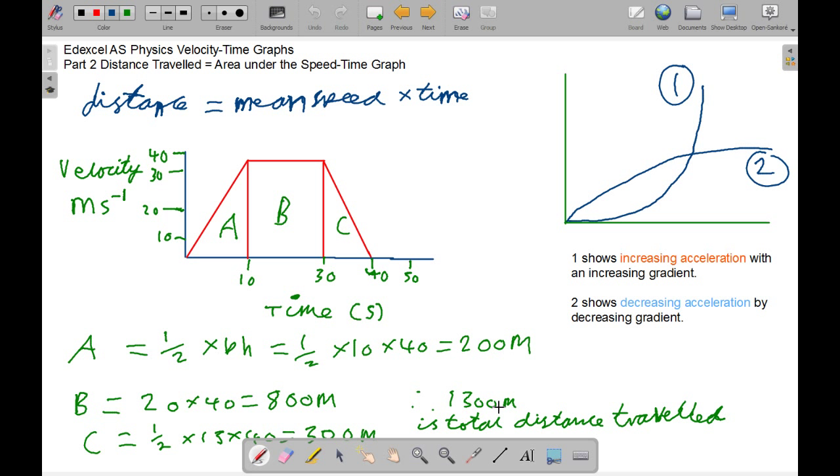And now we'll look at non-uniform acceleration. On a velocity-time graph, non-uniform acceleration is a curve. So for one, it's increasing acceleration with an increase in gradient. And two, it's decreasing acceleration with a decrease in gradient.